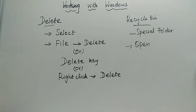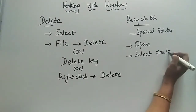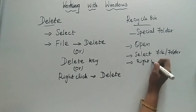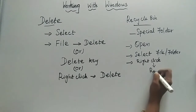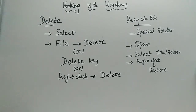After opening the Recycle Bin, select the file or folder you are willing to restore. Then right-click on it — a pop-up will appear with the Restore option. Select Restore. If you want to restore multiple files or folders, select them all, right-click, and click Restore. The file is now restored for you.